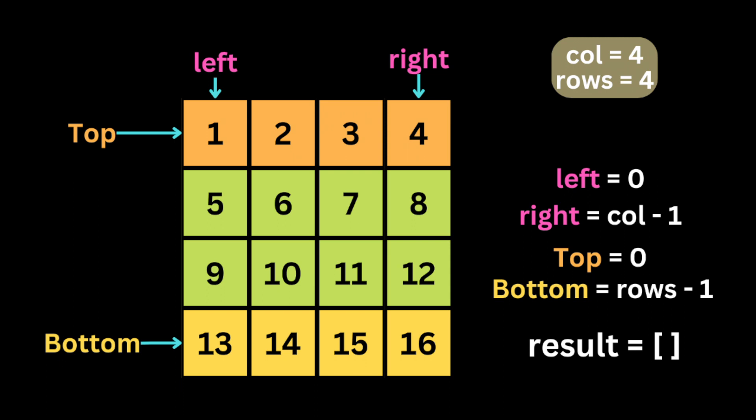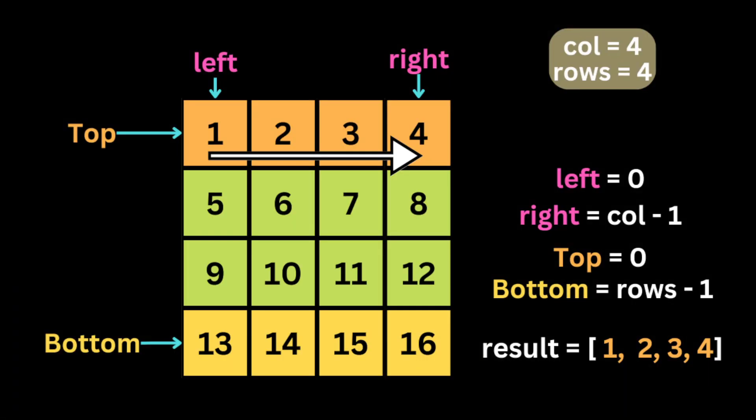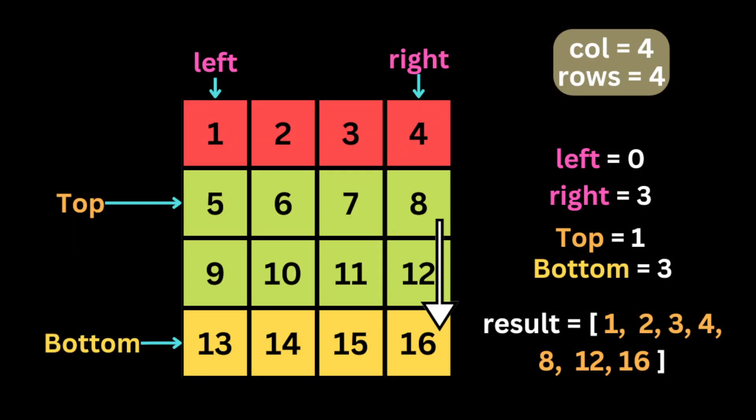We start iterating through all the numbers inside the matrix. The first iteration visits all numbers in the first row — the top row — starting from the leftmost corner to the last number. So we visit 1, 2, 3, and 4. Then we move the top pointer to the second row since we're done with the first row.